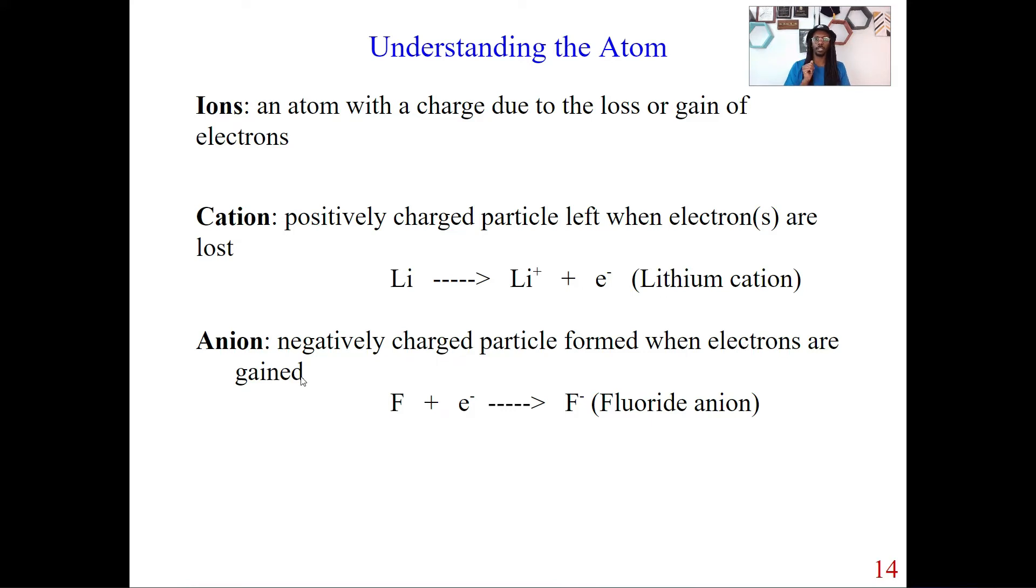Now, on the opposite end, let's look at anions. Anions are negatively charged particles formed when electrons are gained. So the key thing we want to understand here is that it's all about the electrons, if they're going to be lost or gained. So we look at this anion here, fluorine, which is the atom here. Because we understand atoms are neutral.